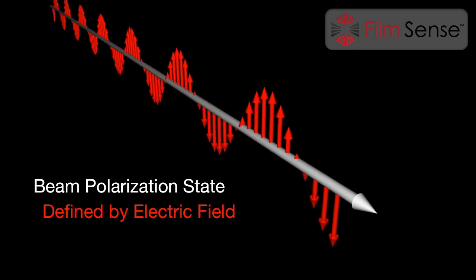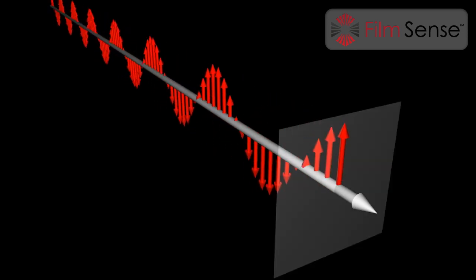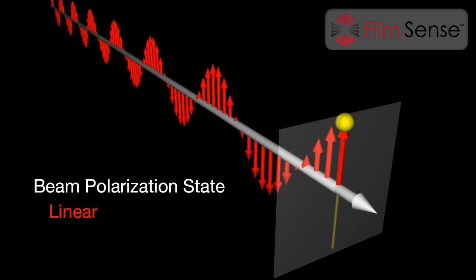The polarization state of a light beam is defined by its electric field and therefore the magnetic field will not be displayed. Imagine putting a screen at a fixed location in the beam path and watching the tip of the electric field vector versus time, as shown by the yellow ball. In this example, the electric field oscillates up and down in a line and the beam polarization state is called linear.